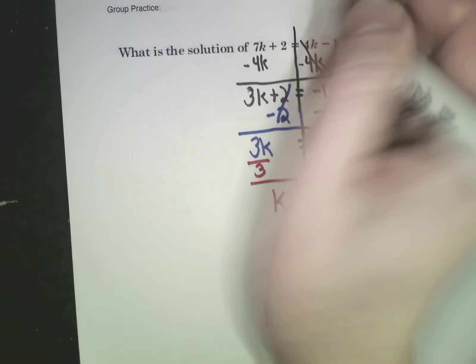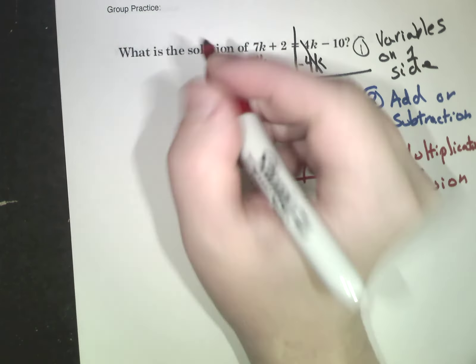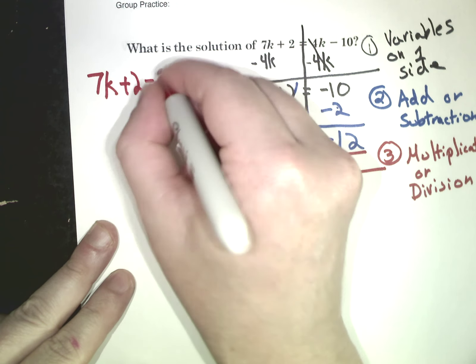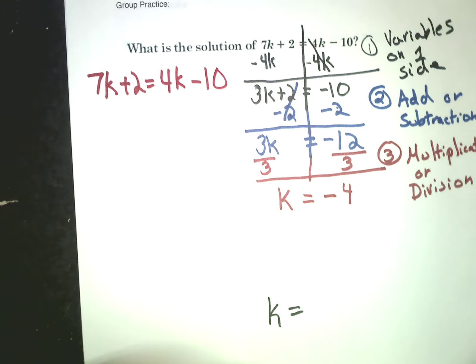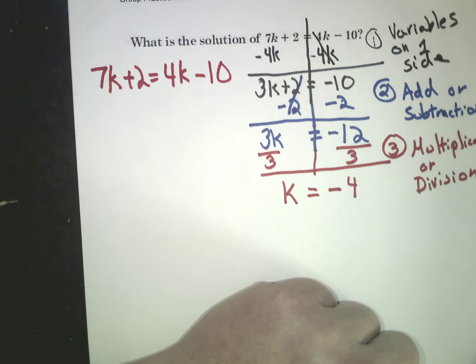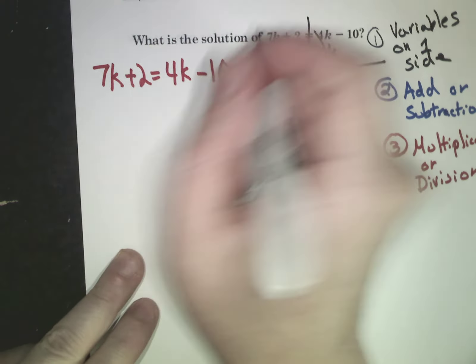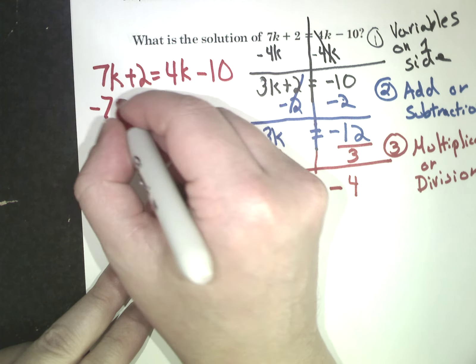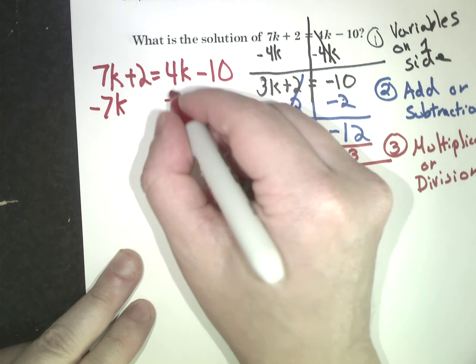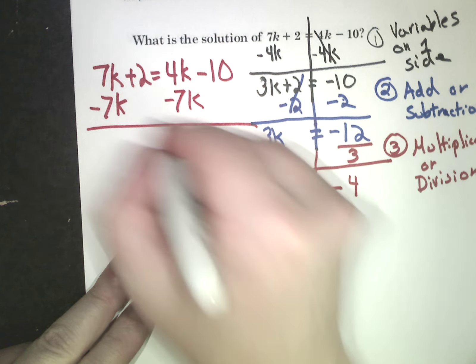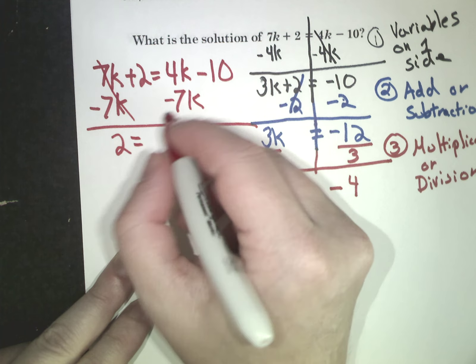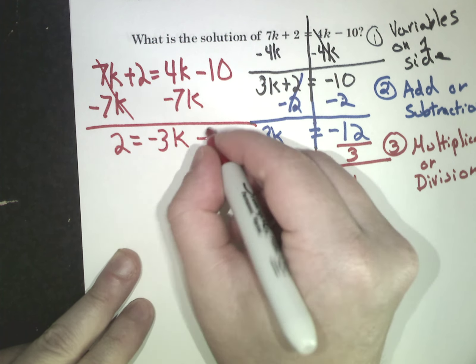Now another question might be, well, what if I did it the other way? Let me show you quick for those who are interested. So instead of moving the 4k, I'm going to move the 7k. Just a different way of doing it. It's not wrong. I'll just show you why it's harder. This goes to 0. I have 2 equals 4 minus 7 is negative 3k. That's why it's harder. Minus 10.